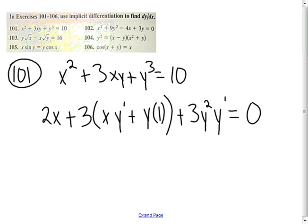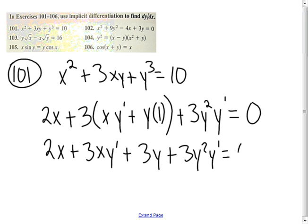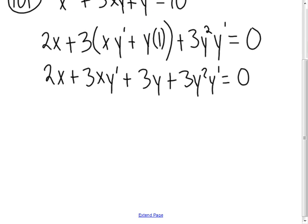Now we would like to do a little algebra on this to solve this for y prime. That's the derivative we're looking for. So let me start here by distributing that 3, 3x plus 3xy prime plus 3y plus 3y squared y prime is equal to 0. Now we're going to take any term that does not have y prime in it over to the other side of the equation, and I'll leave the y prime terms on the left.